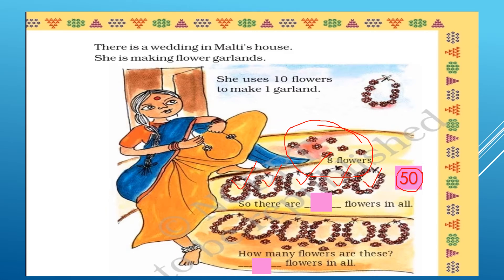So, there are 50 plus eight — fifty-eight flowers in all.